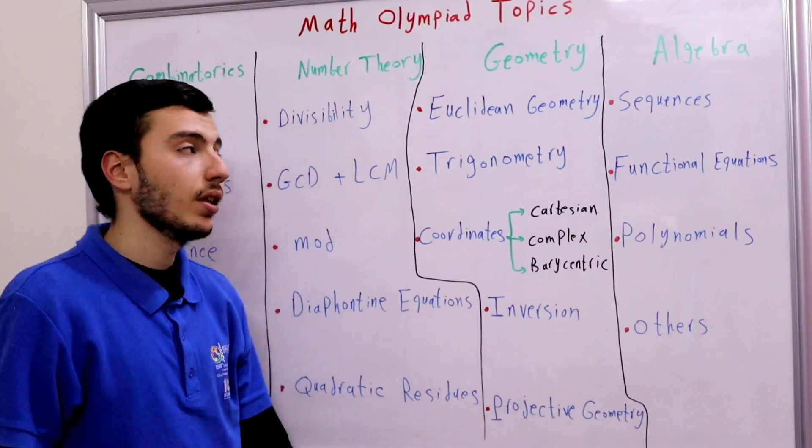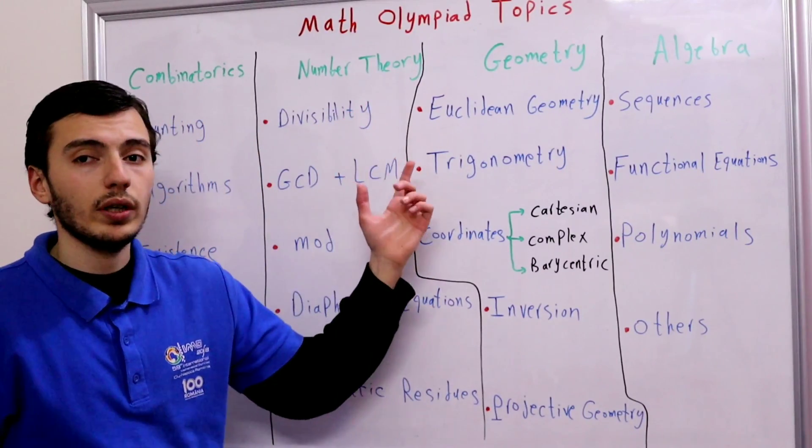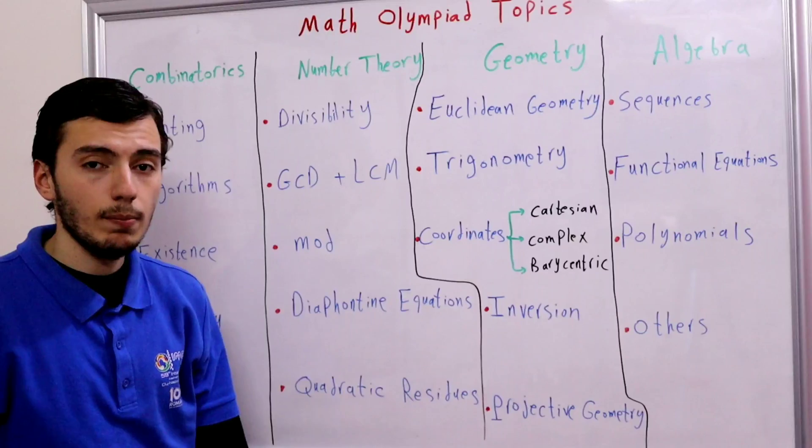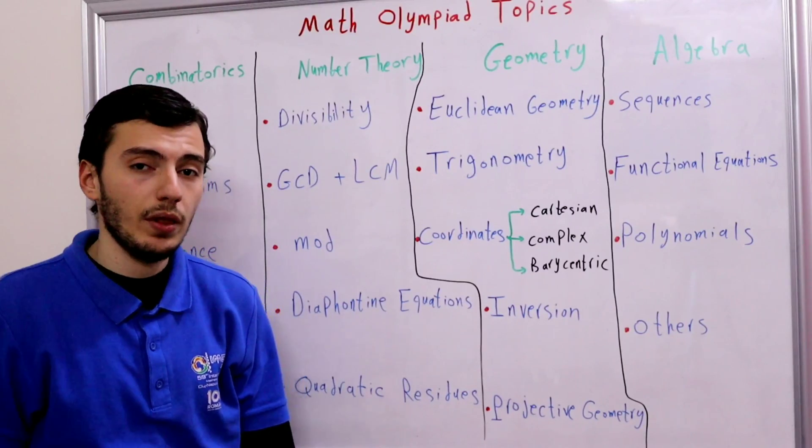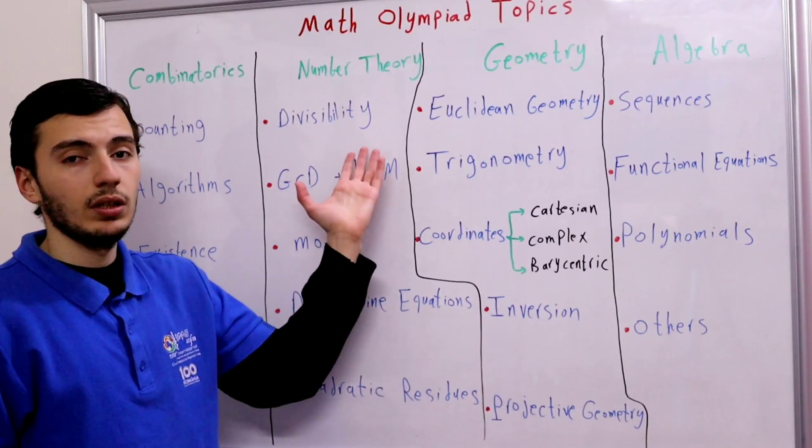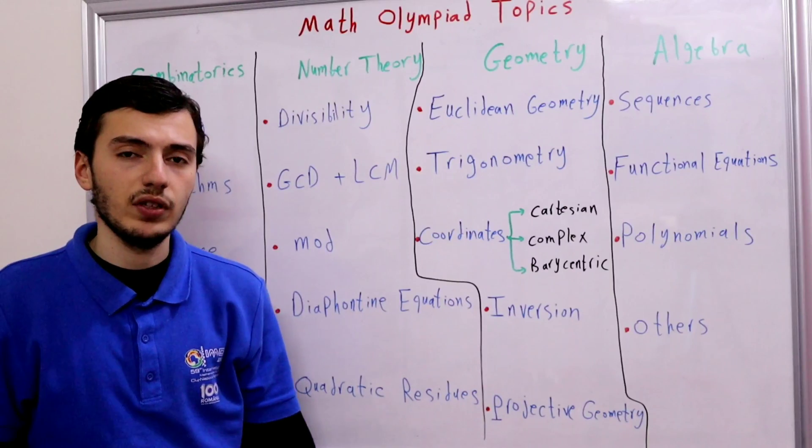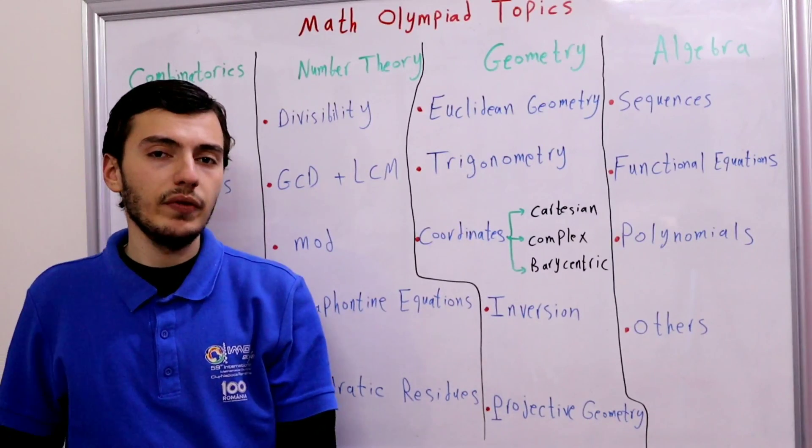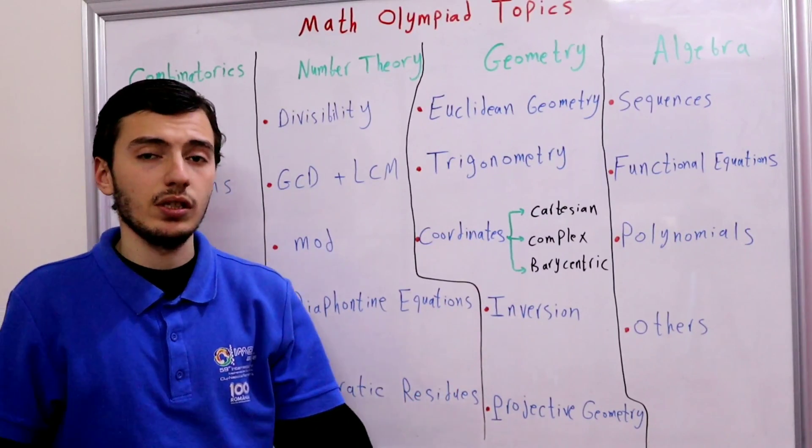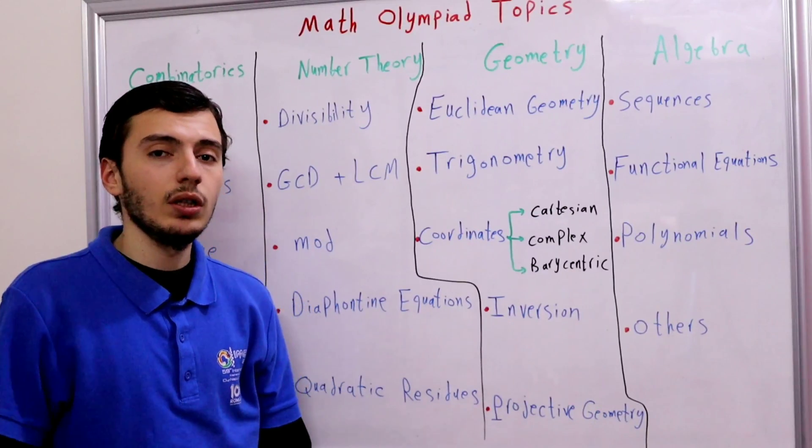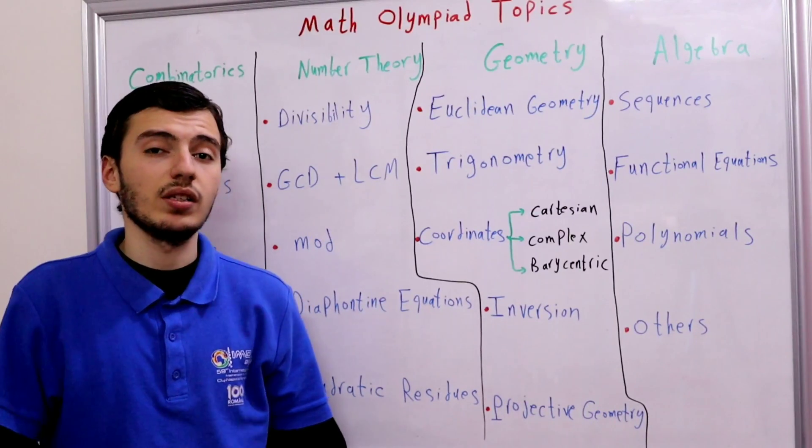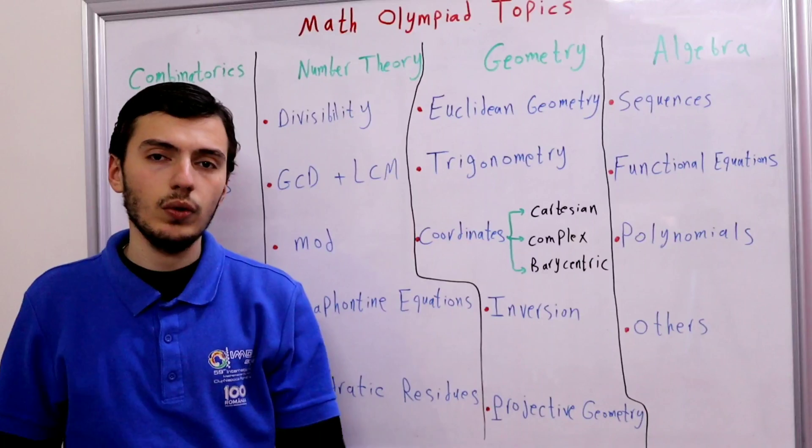The third topic is number theory or NT. The most important subtopic in number theory is divisibility. Don't think that divisibility means two divides even numbers, three divides a number when the sum of its digits is divisible by three. No that's not the case.